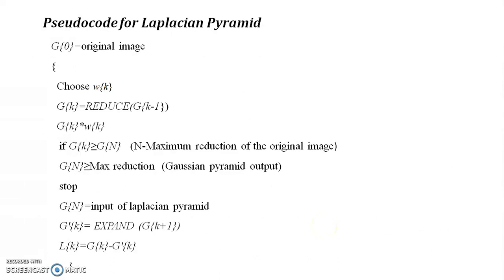In Contourlet Transform, two filter banks are used: one is the Laplacian Pyramid and another one is the Directional Filter Bank. In the Laplacian Pyramid, there are many levels, and we perform operations up to the maximum level. The first step involves Gaussian pyramid information and low-pass filtering.